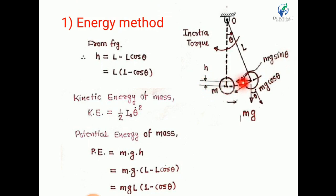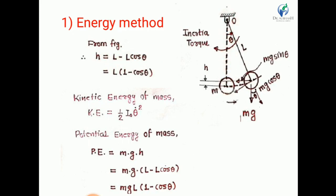This is the initial condition and this is the extreme right position of the pendulum. When the bob reaches the extreme right position, there is an increment in height h. From the figure, h = L minus L·cosθ, since the angle is θ. This simplifies to h = L(1 − cosθ).